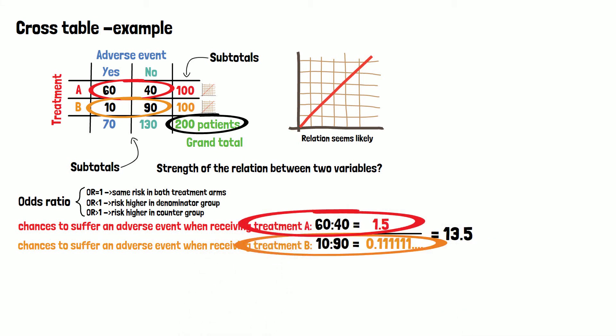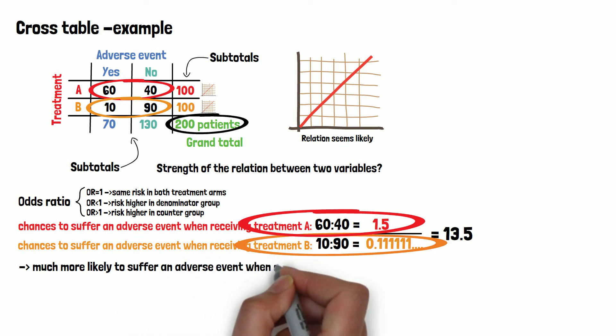In our example, we would end up with an odds ratio of 13.5, telling us that it is much more likely to suffer an adverse event when receiving treatment A.